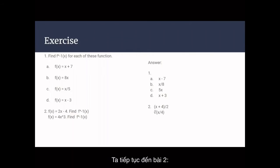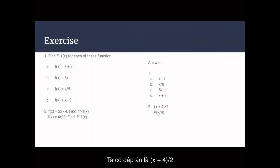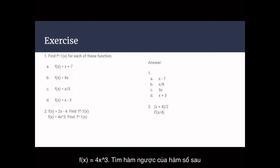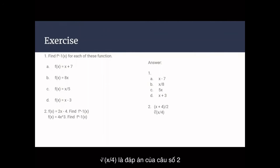Now we'll continue to exercise 2. f(x) equals 2x minus 4. Find the inverse function of it. The inverse function will be x plus 4 divided by 2. The next question: f(x) equals 4x cubed. Find the inverse function of it.